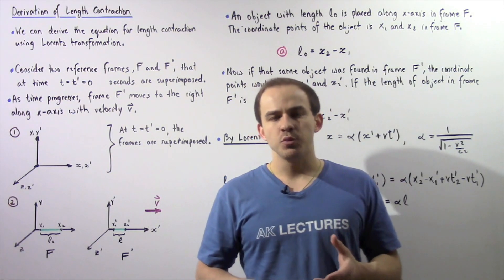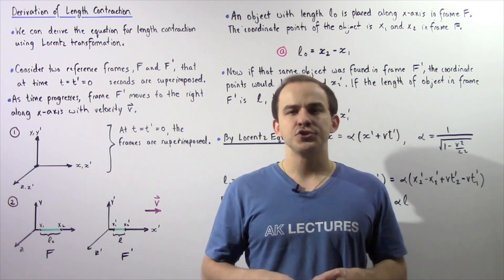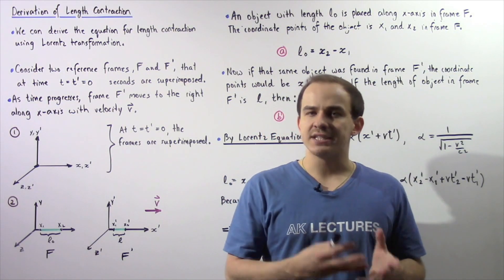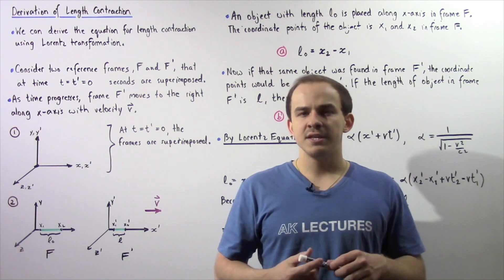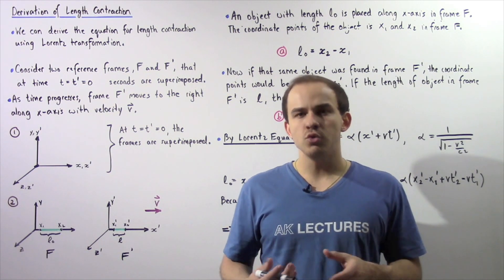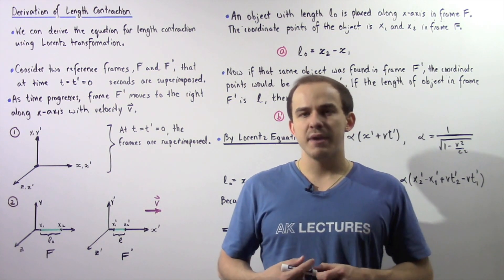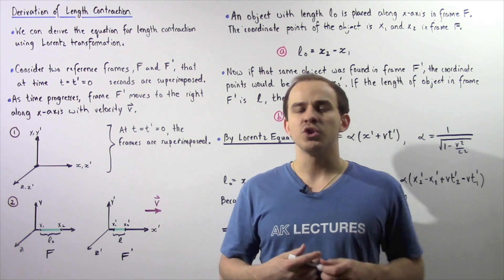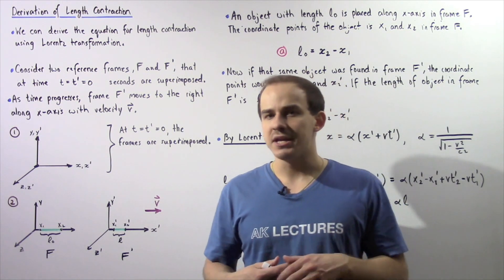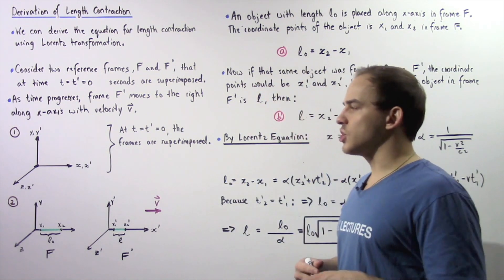One way in which we can derive the length contraction equation that comes from special relativity is by using Lorentz transformations, which is exactly what we're going to examine in this lecture.